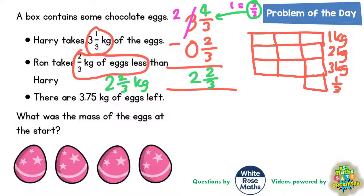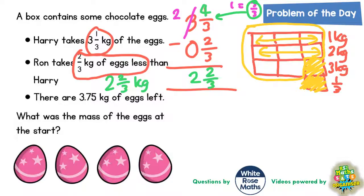Basically Ron would take that one third off and that one third off, and whatever's left would be what Ron takes. Ron has got one whole bar here, two whole bars here, and an extra two thirds — so that's two whole ones and two thirds, which is exactly what we got doing the subtraction column method. So Ron must take two and two thirds of a kilogram of eggs. But there are 3.75 kilograms of eggs left in the box.